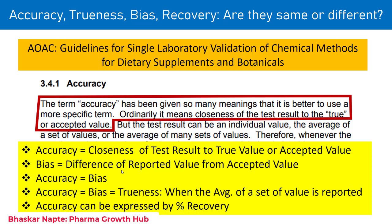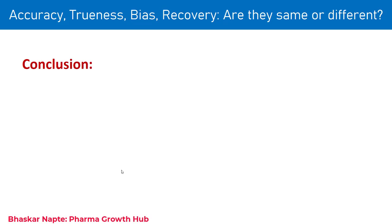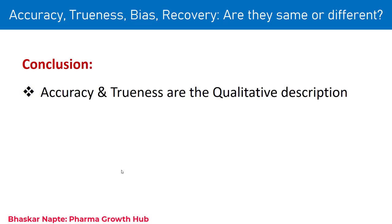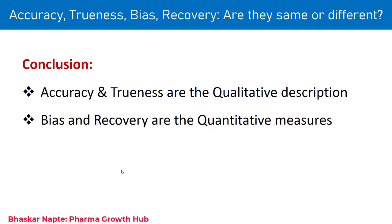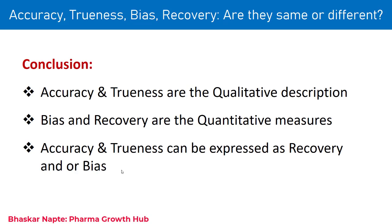Having discussed these four different guidance documents, let us now come to a conclusion. First: accuracy and trueness are qualitative descriptions. Second: bias and recovery are quantitative measures. Third, and very importantly: accuracy and trueness can be expressed as recovery and/or bias. So whatever value you are going to report, it must be in terms of recovery or in terms of bias. Accuracy and trueness can be synonyms for each other.